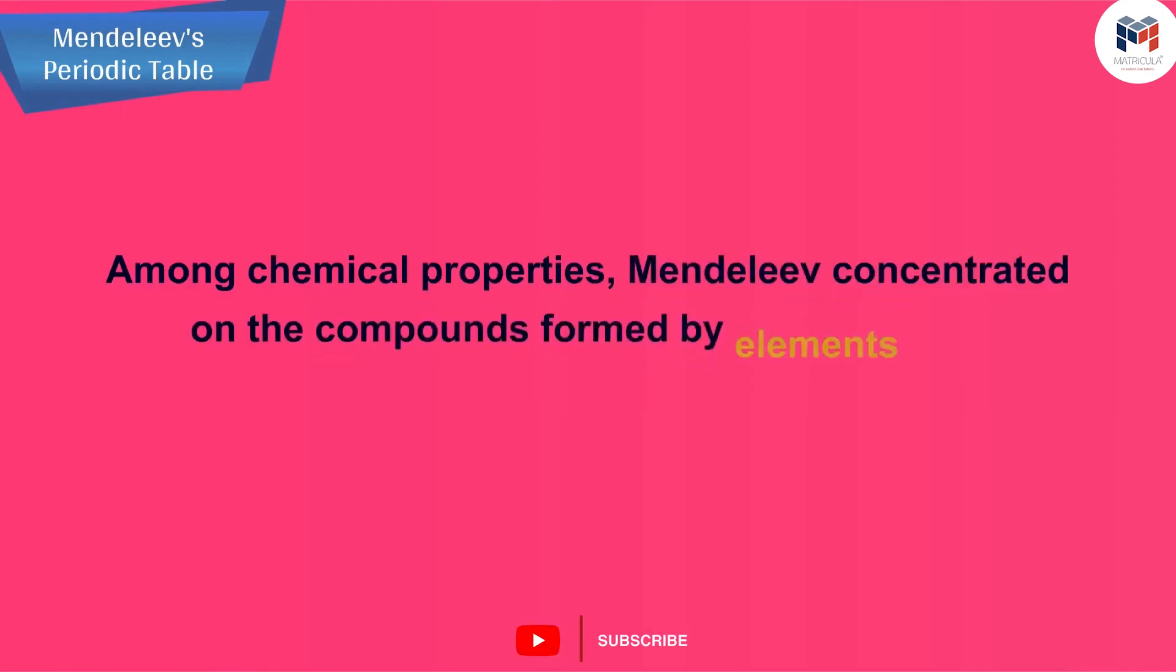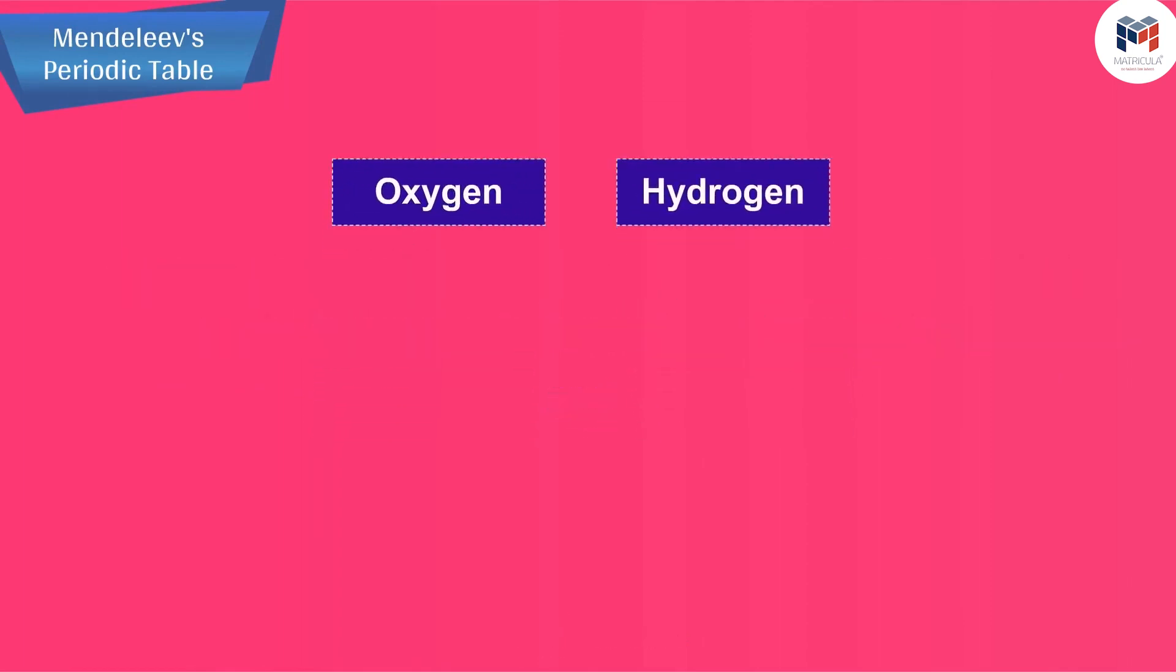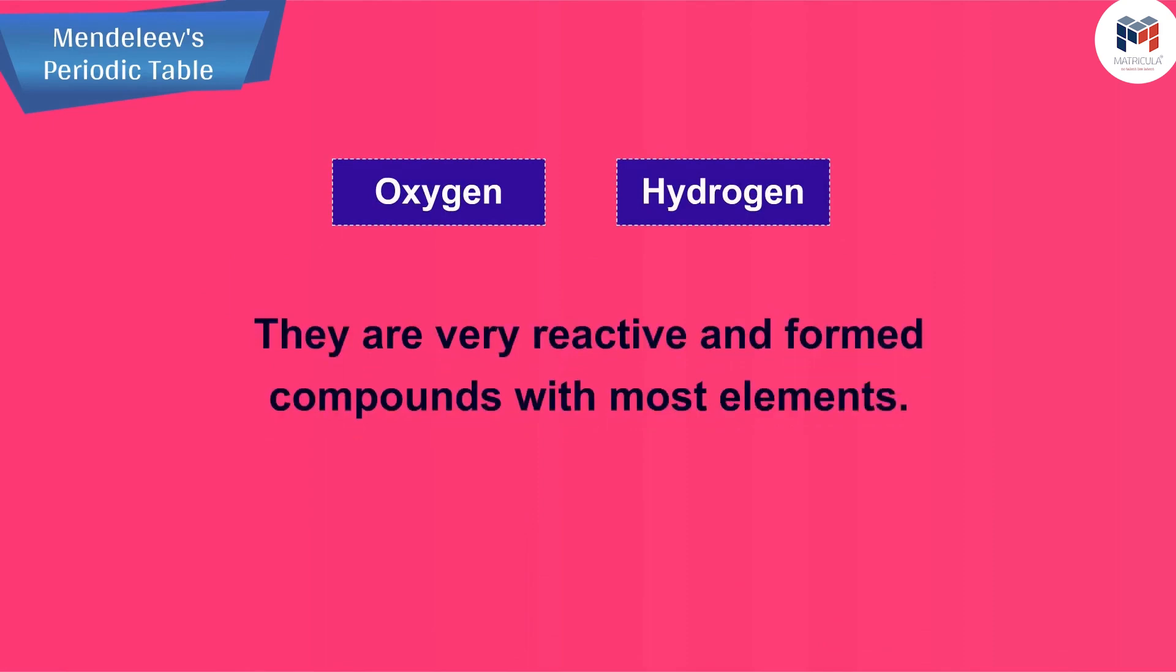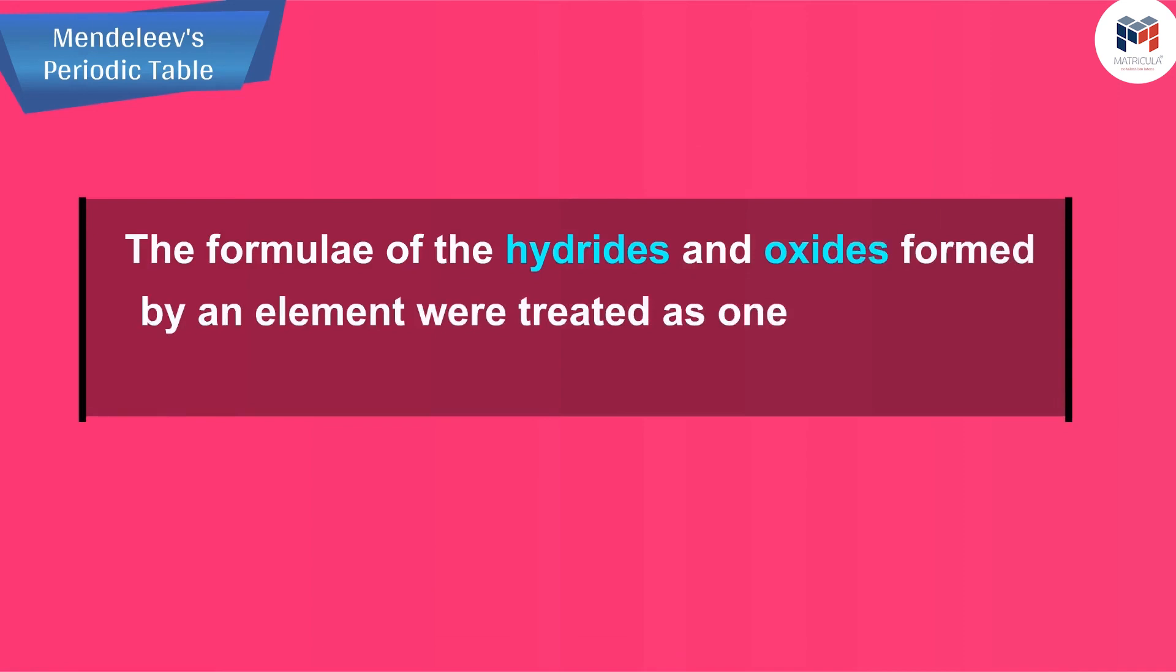He selected hydrogen and oxygen as they are very reactive and formed compounds with most elements. The formulae of the hydrides and oxides formed by an element were treated as one of the basic properties of an element for its classification.